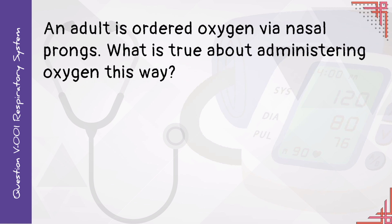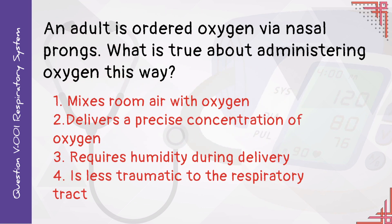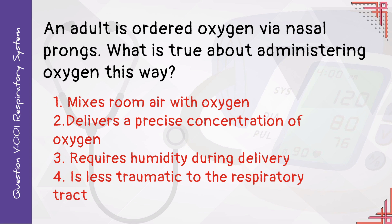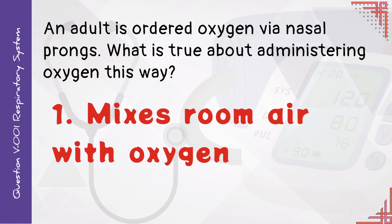An adult is ordered oxygen via nasal cannula. What is true of administering oxygen this way? One: it mixes room air with oxygen. Two: it delivers a precise concentration of oxygen. Three: it requires humidity during delivery. Four: it is less traumatic to the respiratory tract. Answer one: low flow oxygen systems provide an oxygen concentration that is determined by the amount of air drawn into the system and the dilution of oxygen with room air.